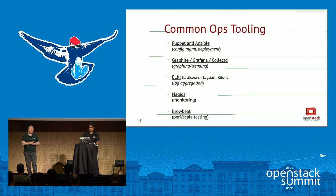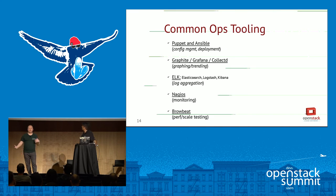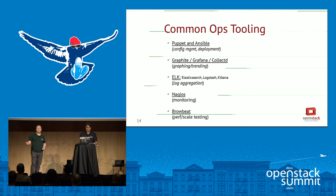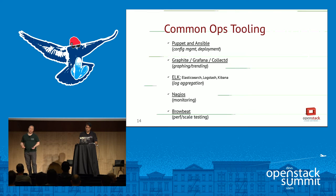There's also a tool called BrowBeat — a performance and scale testing tool for OpenStack. We try to treat performance and scale like CI, so any time we do a new deployment of OpenStack, we run it through various tests: Rally workloads and other scenarios to make sure it's performing at an acceptable level before we open it up to the general public.